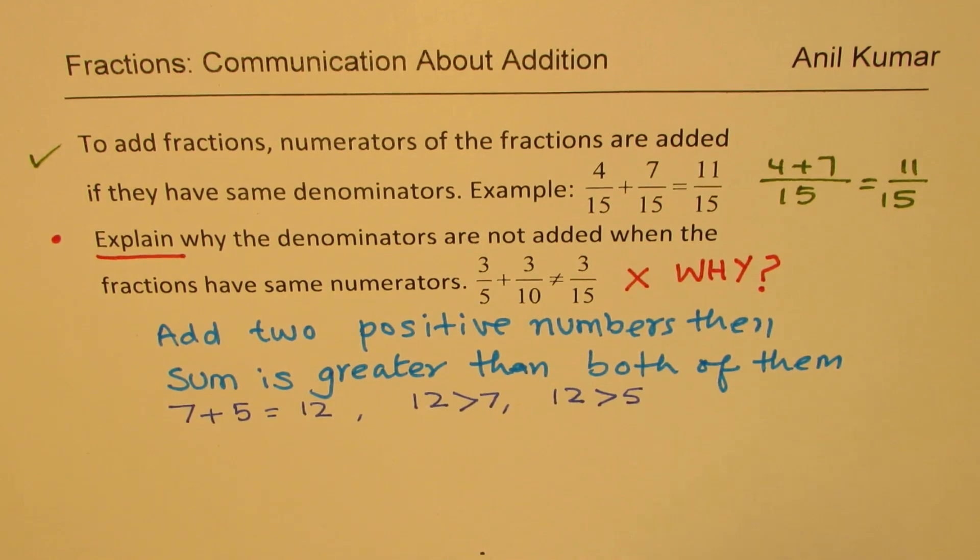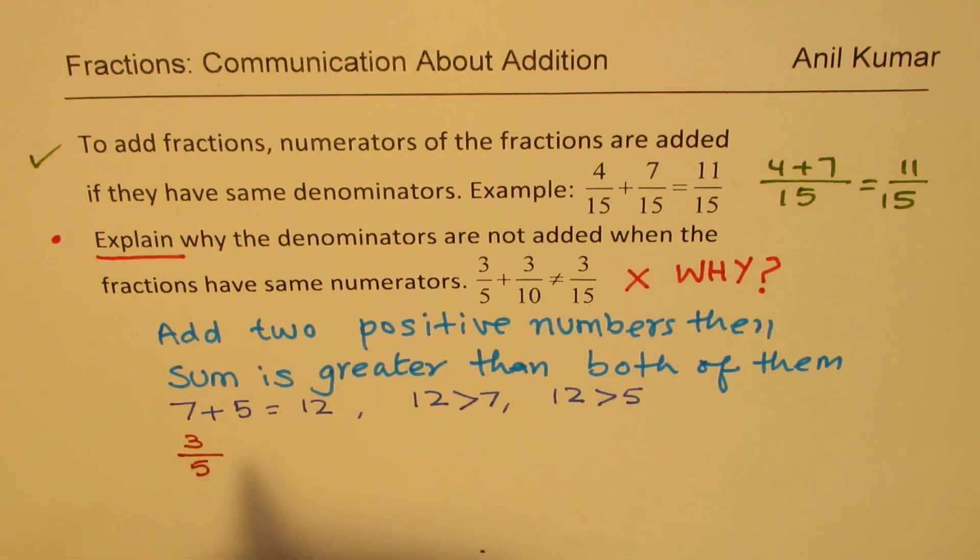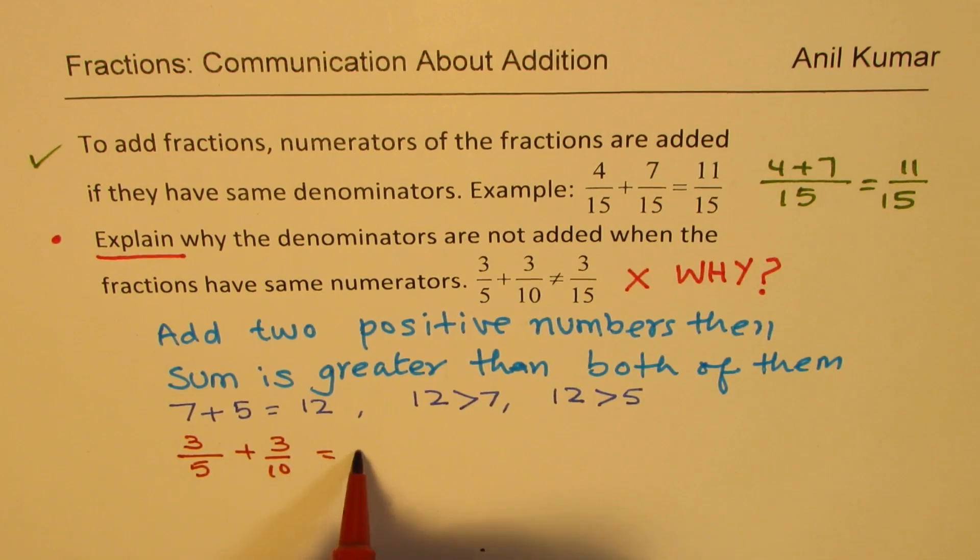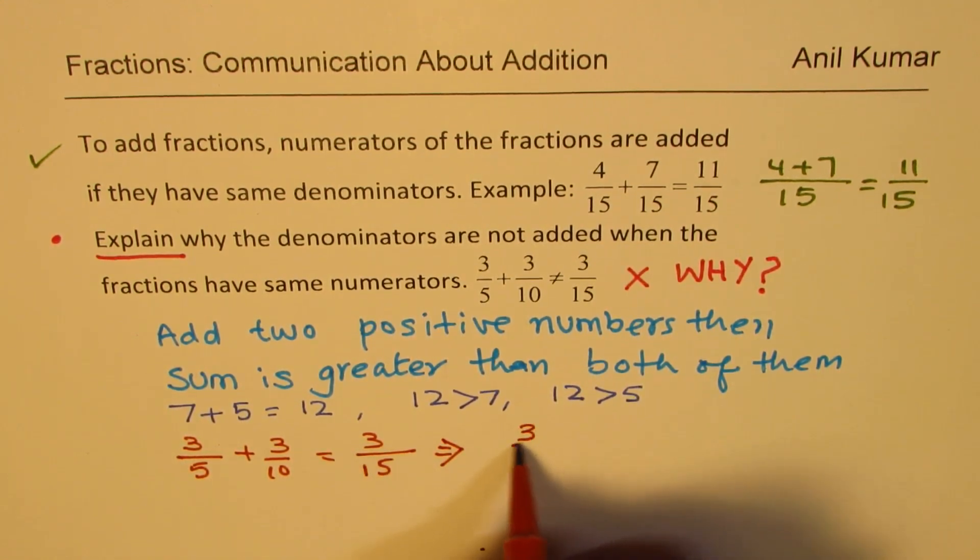Now see what happens if I have 3 over 10 and 3 over 5. Let me write 3 over 5 first and 3 over 10. If you add the denominators, make it 15, 3 over 15, then what do you get? 3 over 15 is much smaller than both of them, right?